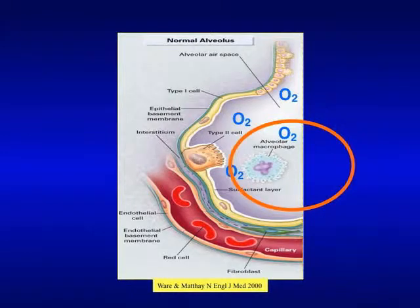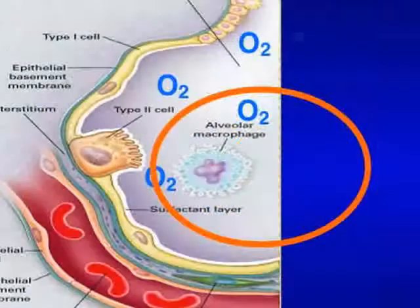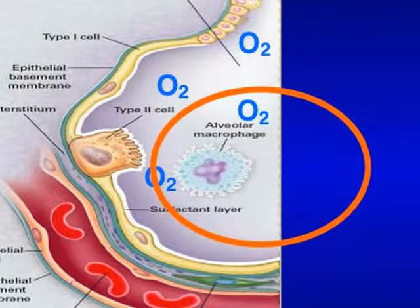This schematic drawing illustrates the structure of a normal alveolar structure. The most important phagocyte in the lung are alveolar macrophages.